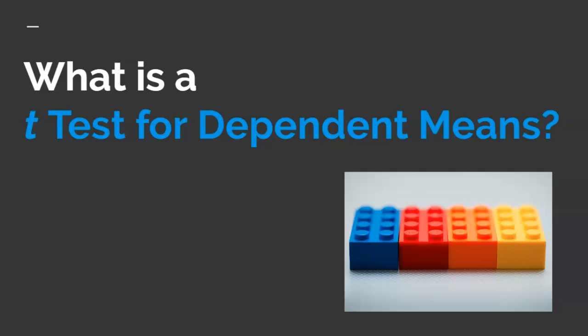A t-test allows researchers to conduct a hypothesis test when population variance, sigma squared, is not known. There are three different types of t-tests. The second type is known as a t-test for dependent means. In its simplest form, the sample will be tested twice, like having a pre-test and a post-test. In other words, the sample is dependent on themselves because we're testing if there's a difference before and after a drug or treatment.